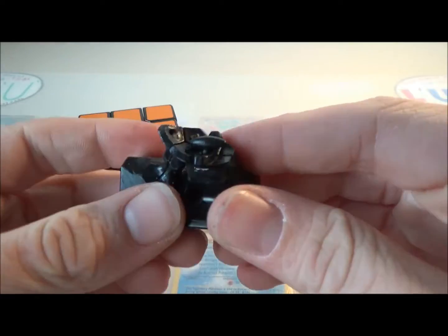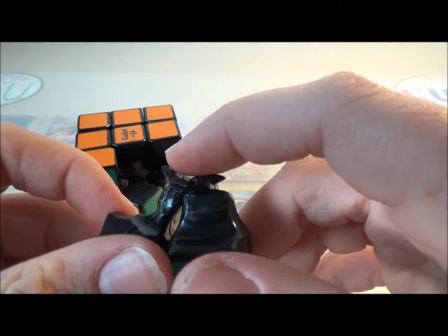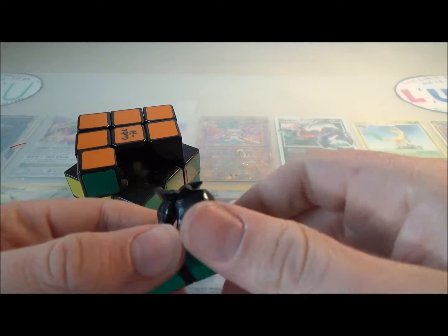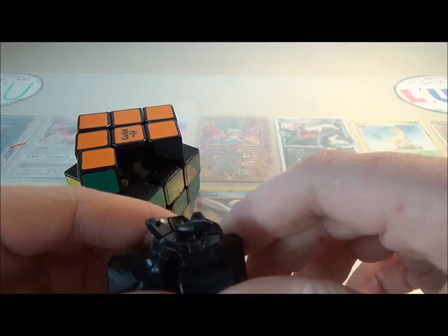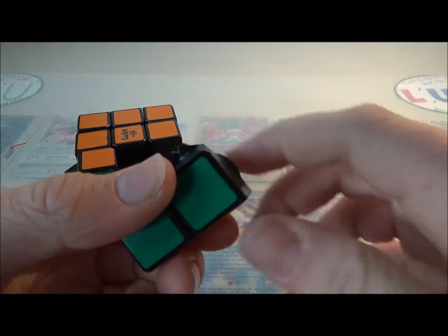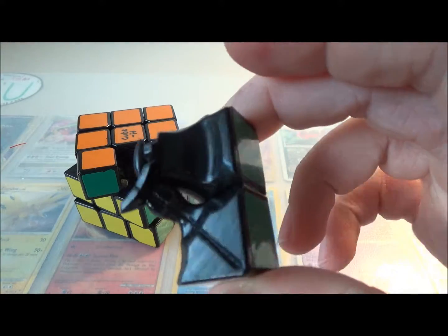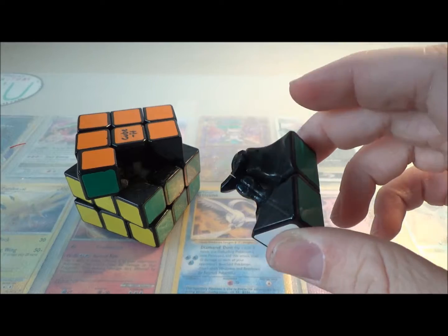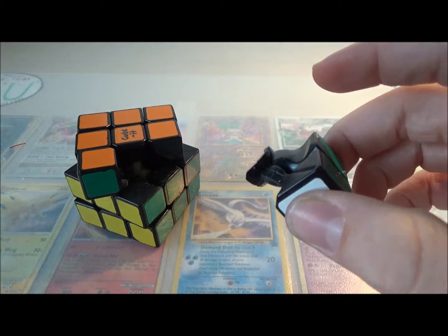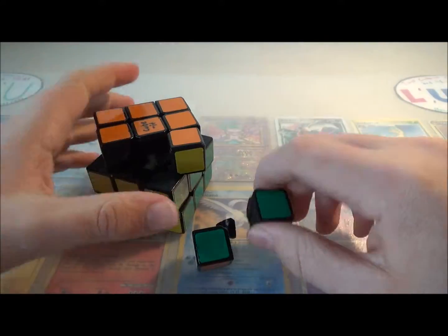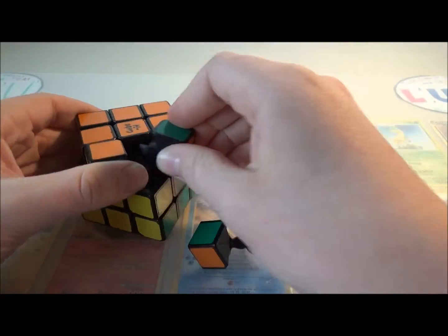So that's how they fit together. This slips under that. Next to the Shuang Ren, the Fangshi Shuang Ren, I'd say this is the best pop resistant manufacturing I think that's out there. But I think the Shuang Ren's still a little bit better. But I just like how well this fits together and how smooth everything is.